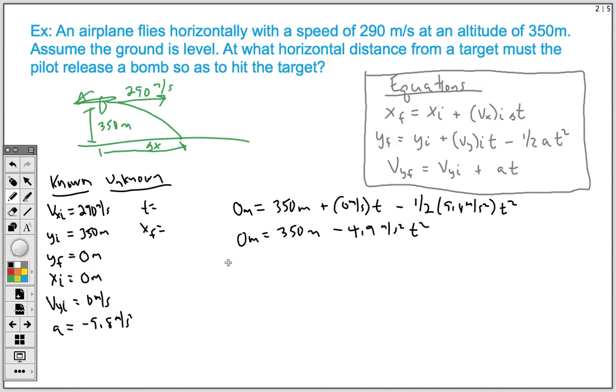We're going to get T squared all by itself. We're going to subtract 350. That's going to give us negative 4.9 meters per second squared times T squared. To get T squared all by itself, divide by negative 4.9 on both sides. We're going to end up with 71.4 seconds squared equals time squared. And then to finish this off, we're going to square root both sides so that our time comes out to be 8.4 seconds.